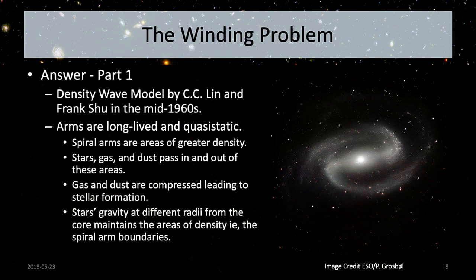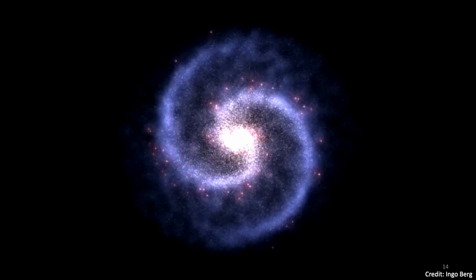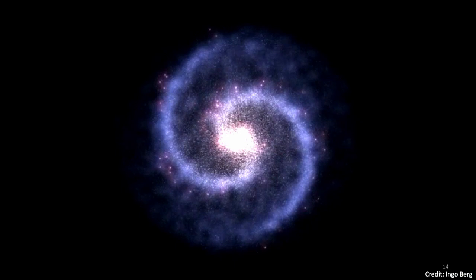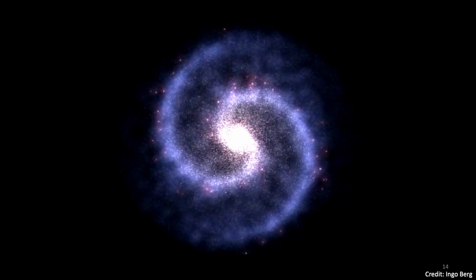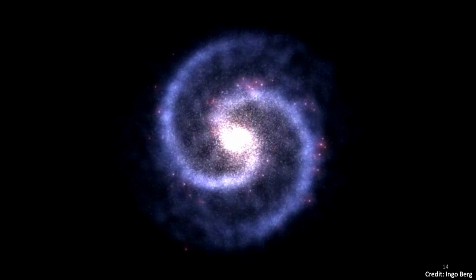The gas and dust slows down encountering that density, triggering star formation. Stars' gravity at different radii from the core can maintain these areas of density, and the spiral arms can be perpetuated for a long time. In the animation, little red dots are star-forming regions, bright blue areas are very hot, massive, short-lived stars. As those stars move out of the arms they die off, leaving only dimmer stars throughout. This is what density wave theory says about how spiral galaxies maintain their structure.